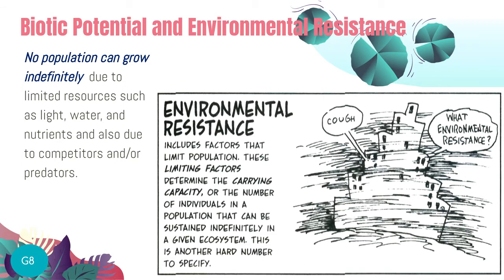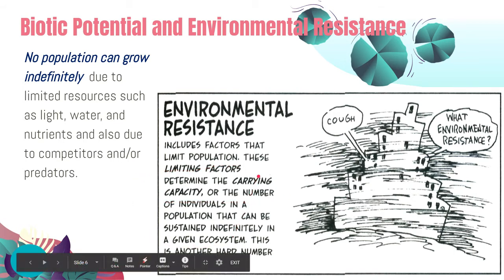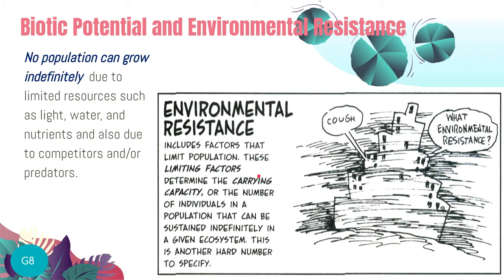Environmental resistance is the other force that maintains balance in an ecosystem. Environmental resistance refers to factors that limit the population — they counter biotic potential. While biotic potential drives population increase, environmental resistance limits population growth. These are called limiting factors, and they are determined by the carrying capacity of the ecosystem — how many lions, leopards, frogs, or snakes a given ecosystem can sustain.